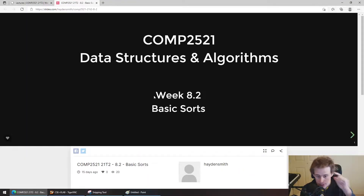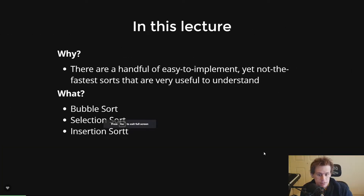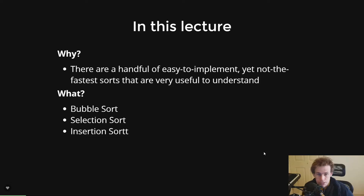Okay, so basic sorts. There are three types of sorts we're going to be looking through today, which are bubble sort, selection sort, and insertion sort. We've already done a bit on bubble sort in the previous lecture. We've said previously that these three sorts are not the fastest — they're n-squared sorts — and that there are other sorts which are more complicated and more capable, such as quick sort and merge sort.